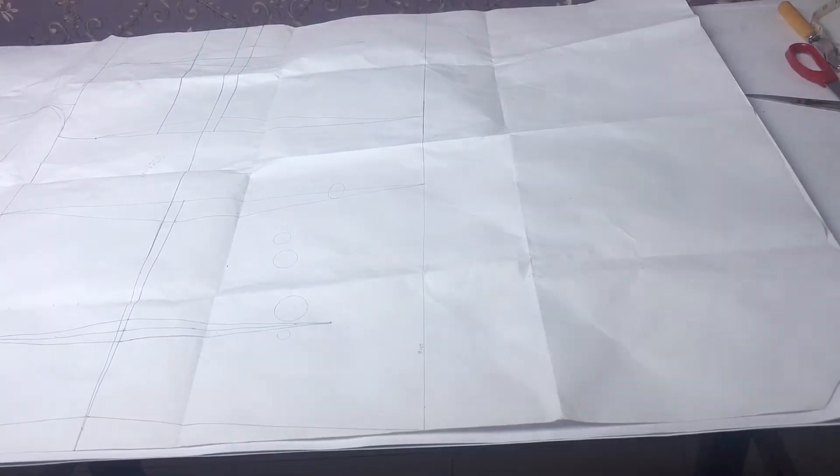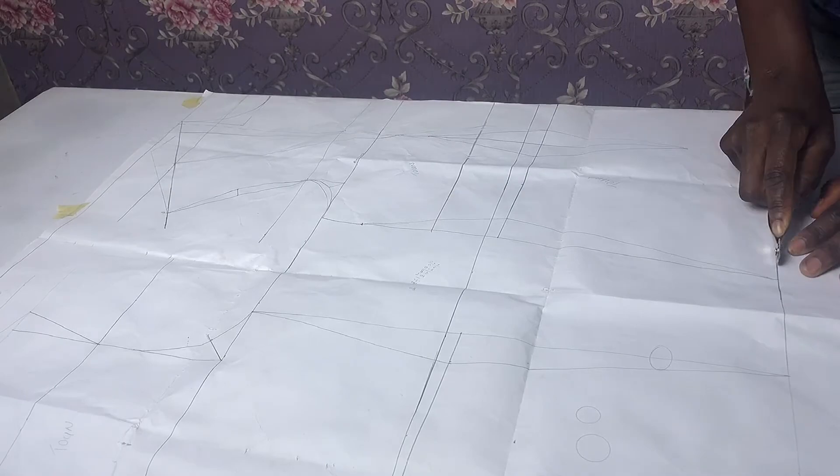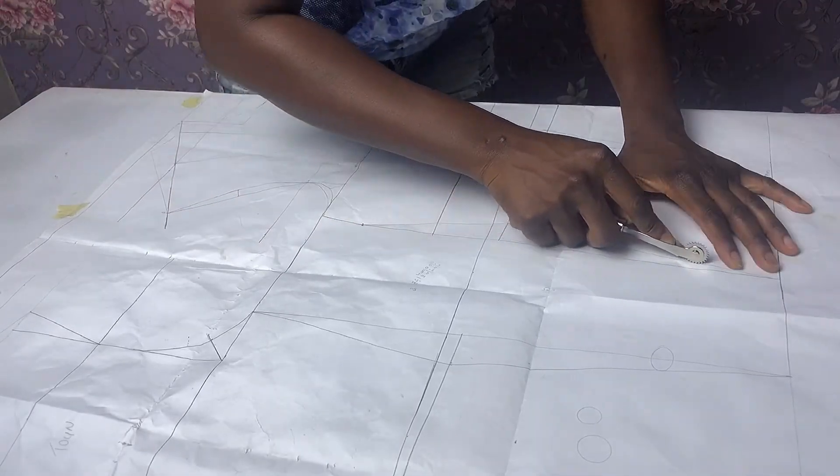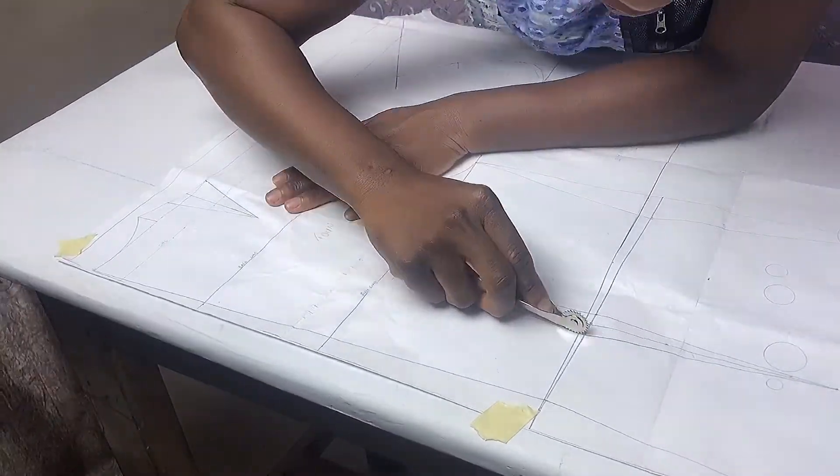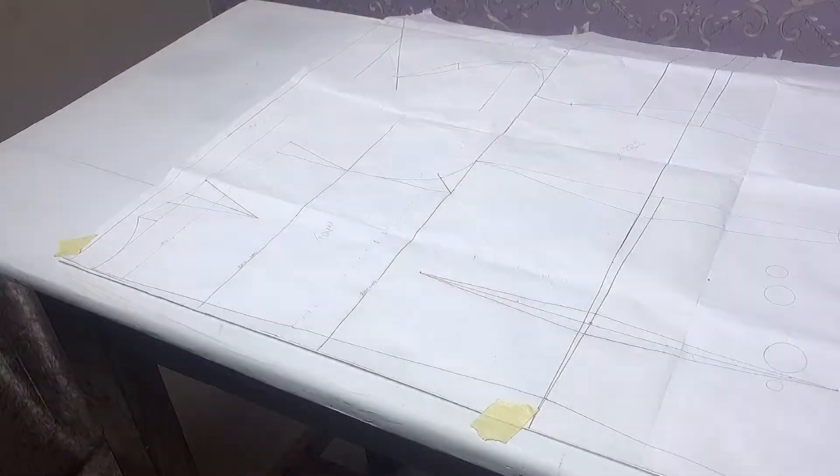First I am tracing my bodice block on fresh pattern paper. Note that I drafted this bodice block using the Nathalie Bray pattern and I am tracing my front and my back bodice.